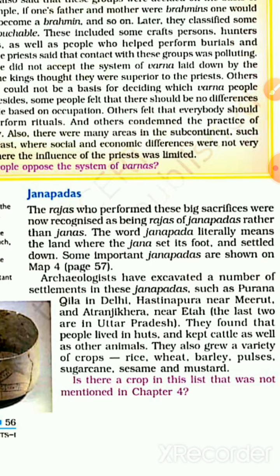Some important Janpads are shown on map 4, page 57. Archaeologists have excavated a number of settlements in these Janpads, such as Purana Qila in Delhi, Hastinapur near Meerut, and Atranjikhera near Etah. They found that people lived in huts and kept cattle as well as other animals. They also grew a variety of crops: rice, wheat, barley, pulses, sugarcane, sesame, and mustard.